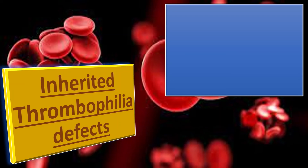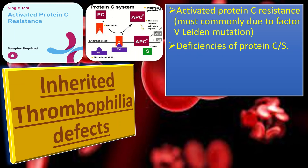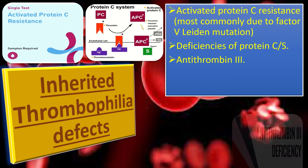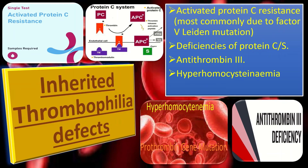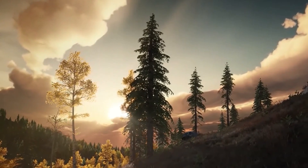Both inherited and acquired thrombophilias — including activated protein C resistance most commonly due to Factor V Leiden mutation, deficiencies of protein C, protein S, and antithrombin III, hyperhomocysteinemia, and prothrombin gene mutations — are established causes of systemic thrombosis. Inherited thrombophilias have also been implicated as possible causes of recurrent miscarriages and late pregnancy complications, with the presumed mechanism being thrombosis of the uteroplacental circulation.